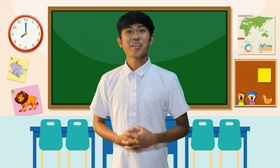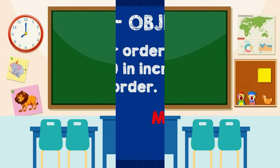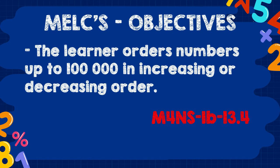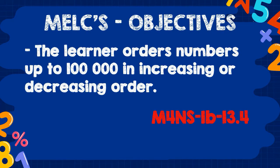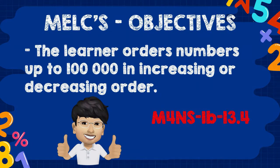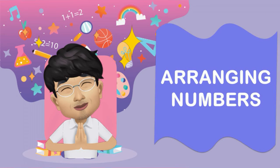Before we continue our journey today, let me give you first the things that we have to accomplish and learn. First objective: the lesson today — the learner will order numbers up to 100,000 in increasing or decreasing order. And our first lesson today is arranging numbers.